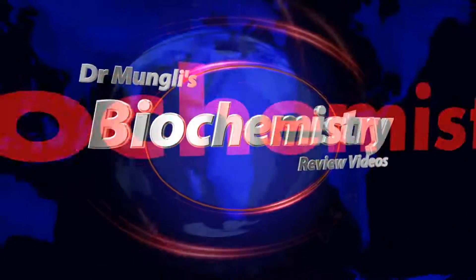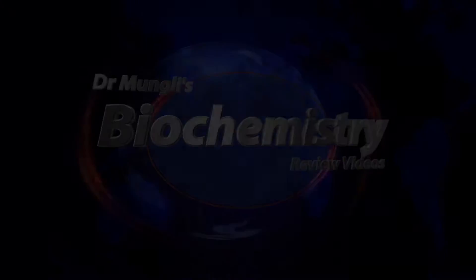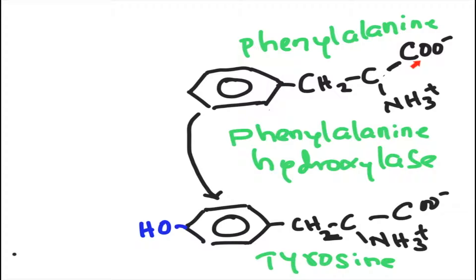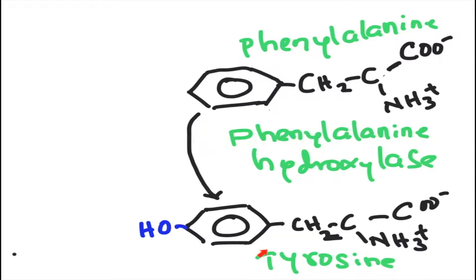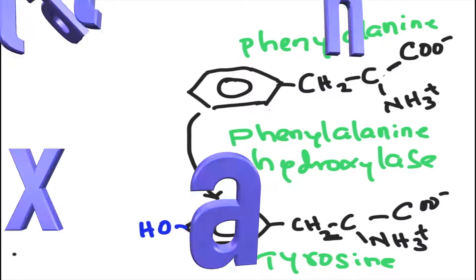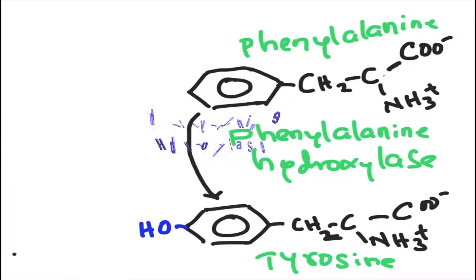Phenylalanine has an alpha carbon, carboxyl group, amino group, CH2, and a benzene ring. Phenylalanine is an essential amino acid, and tyrosine is a non-essential amino acid, so phenylalanine must be converted into tyrosine. That job is done by the enzyme phenylalanine hydroxylase, which introduces a hydroxyl group to phenylalanine to convert it into tyrosine.